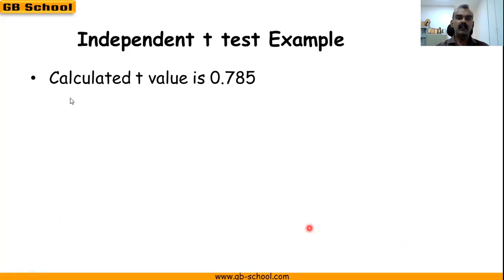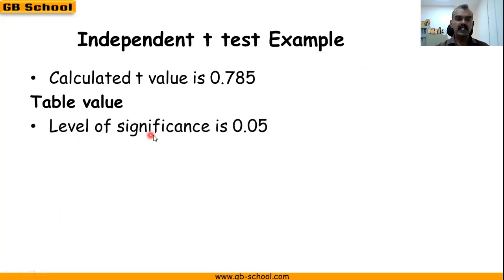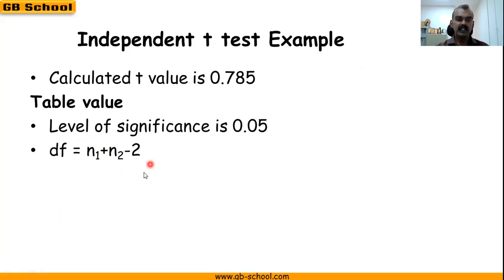According to hypothesis testing steps, next we find the table value. To find the table value, we need two parameters: the level of significance, fixed at 0.05, and the degrees of freedom. For independent t-tests, df = n₁ + n₂ − 2 = 5 + 5 − 2 = 8.